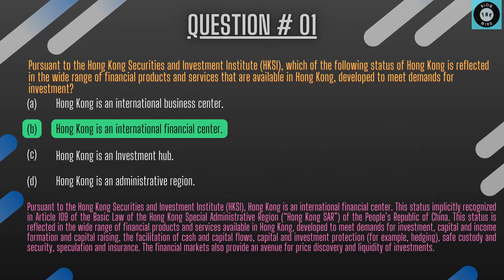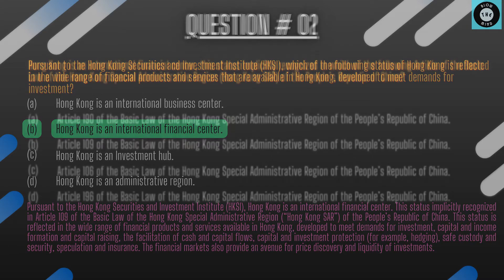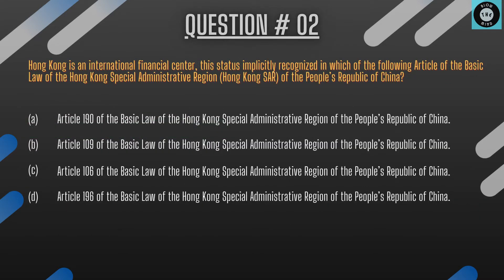The question is: Hong Kong is an international financial center. This status is implicitly recognized in which of the following articles of the Basic Law of the Hong Kong Special Administrative Region of the People's Republic of China?